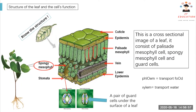Spongy mesophyll cell also has a lot of chlorophyll. The chlorophyll is for photosynthesis. Then at the bottom of the leaf you have the stomata. Stomata is the plural; you can also call it stoma. It's controlled by a pair of guard cells, and the guard cells can open and close depending on the situation.